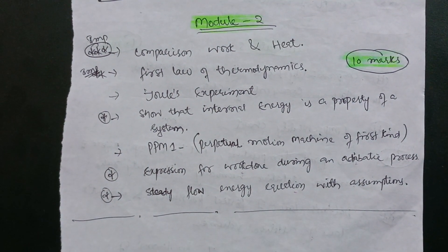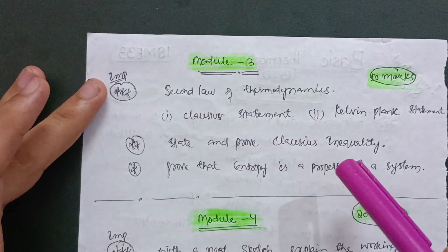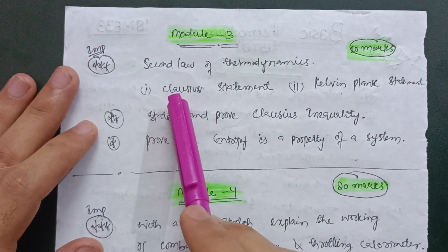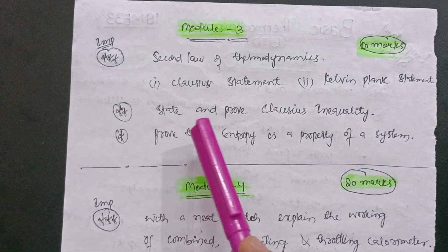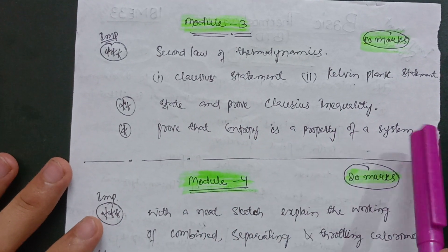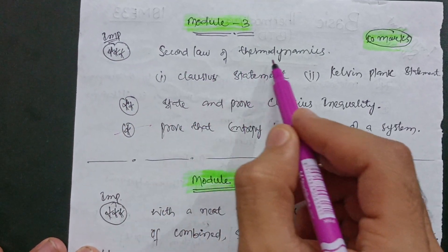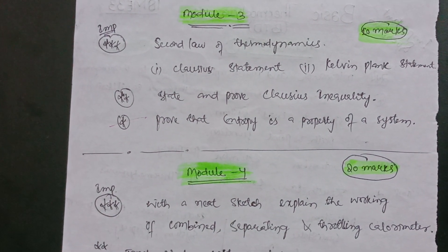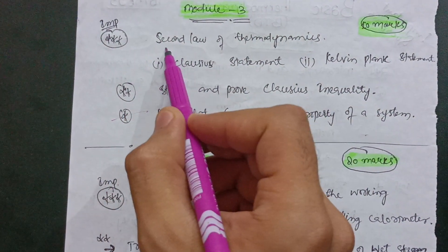In the third module, you only need to cover three particular topics. That is the second law of thermodynamics: first, the Clausius statement; second, the Kelvin-Planck statement; and third, state and prove Clausius inequality and prove that entropy is a property of a system. The second law of thermodynamics is a super important question always asked in VTU examinations — you can refer to previous year papers to confirm this.